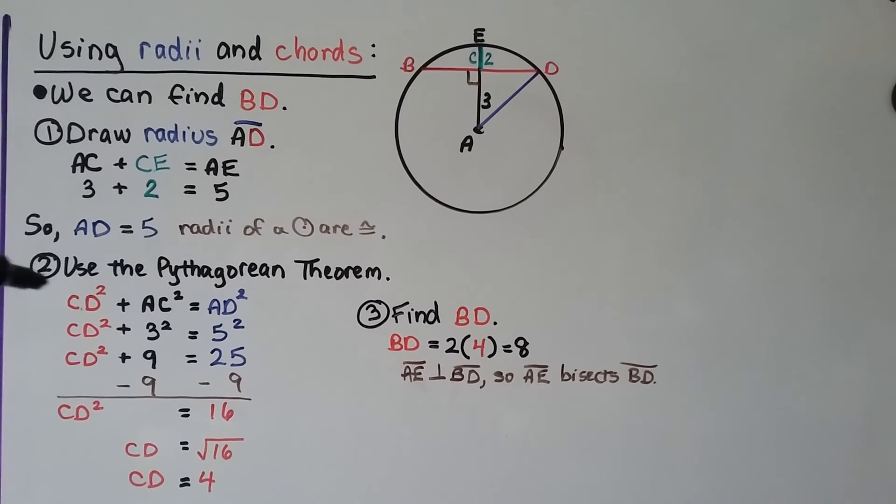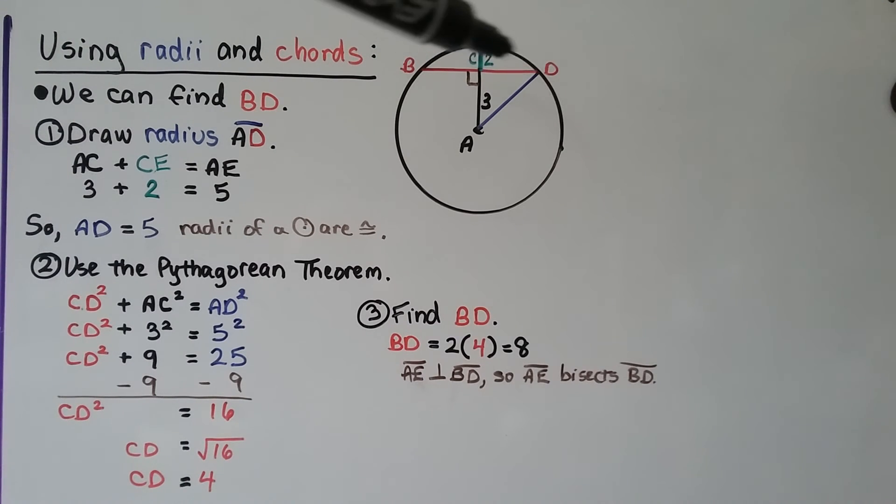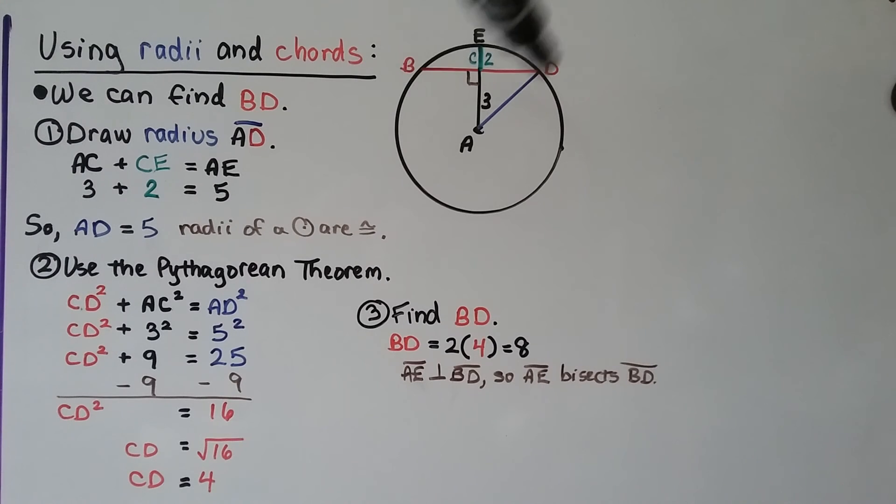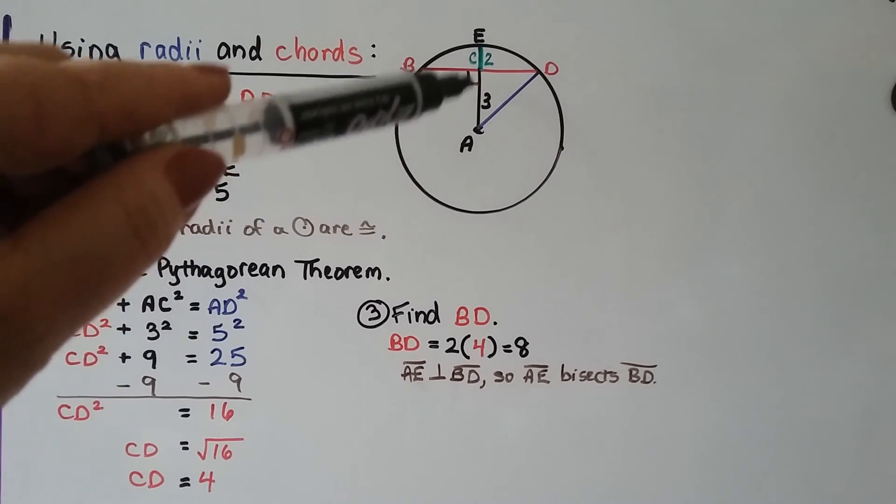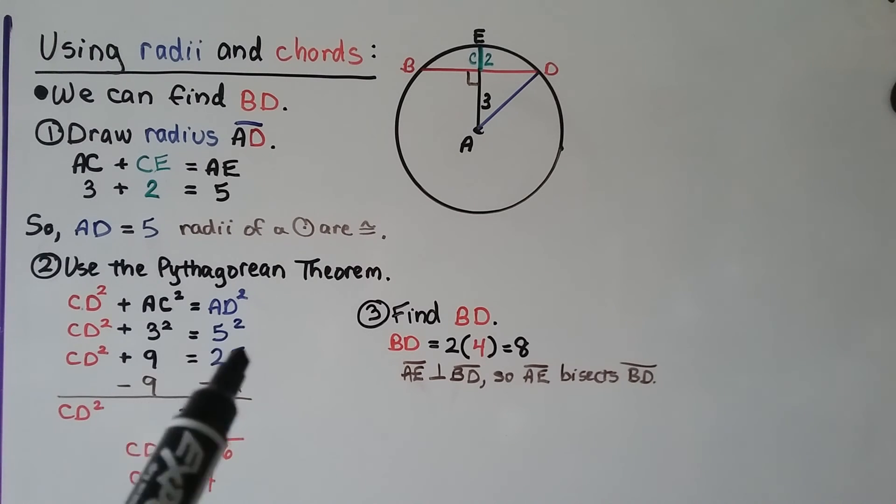So now we can use the Pythagorean theorem and say CD squared, that's this half of the chord, plus AC squared is going to equal AD squared. Because we have a right triangle, right? CD squared plus 3 squared, because that's a 3, is equal to 5 squared, because we know that's a 5 now. That means CD squared plus 9 is equal to 25. And we subtract the 9 from both sides and we find out that CD squared, this portion right here, is equal to 16. We can take the 2 exponent off and put a radical around that side, can't we? So we get CD is equal to the square root of 16, which means it's 4.